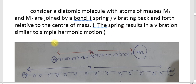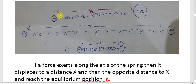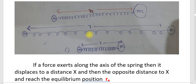The spring results in a vibration similar to simple harmonic motion. We select the spring model because a spring undergoes simple harmonic motion. Looking at the diagrammatic representation, we see three representations: M1 and M2 with the distance between them considered as R_A — the bond length formed between M1 and M2. If a force is exerted along the axis, the spring may undergo extension or compression.